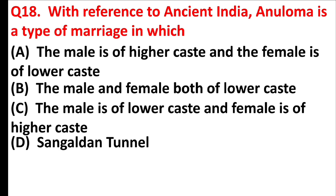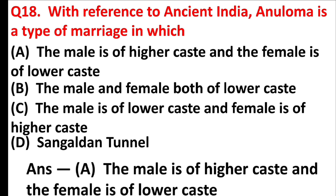With reference to ancient India, Anuloma is a type of marriage in which the male is of higher caste and the female is of lower caste. Answer is option A.